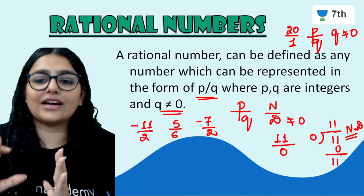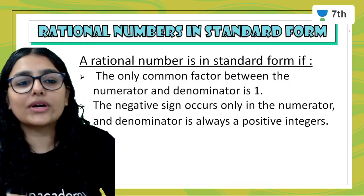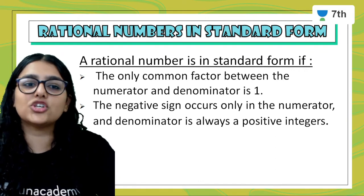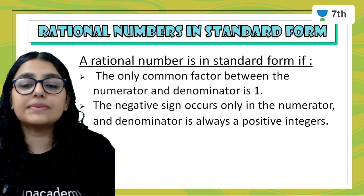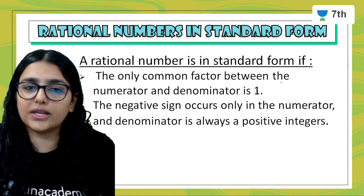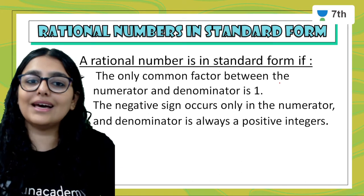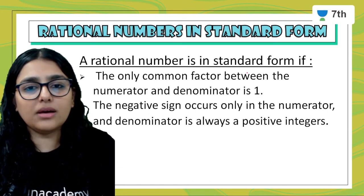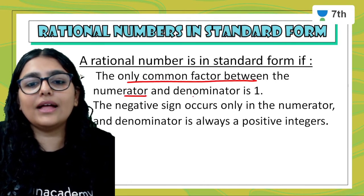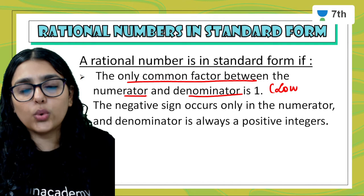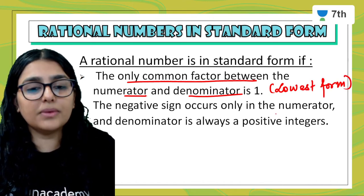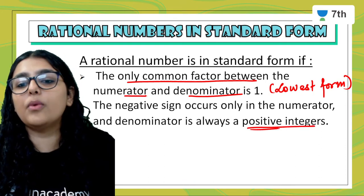All positive and negative fractions are called rational numbers. Moving forward, let's look at the properties of rational numbers — that is, the rational number in standard form. A rational number is in standard form if the only common factor between the numerator and denominator is 1 — that means it is in the lowest form. Also, the negative sign occurs only in the numerator and the denominator is always a positive integer.